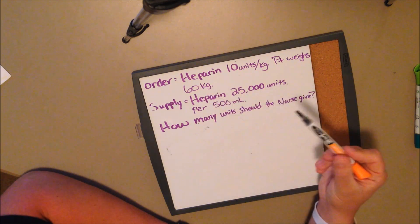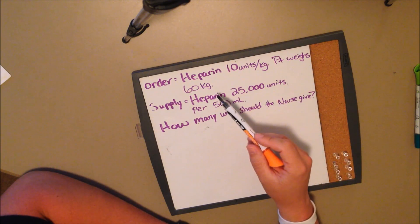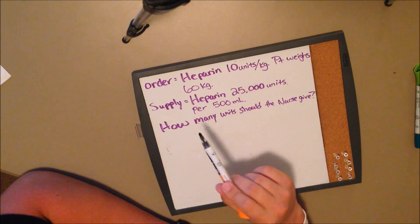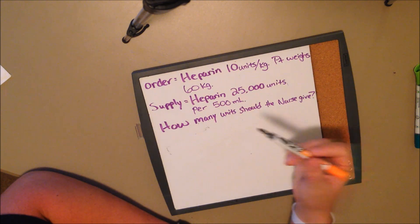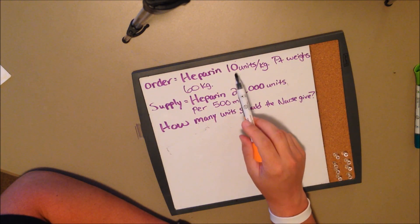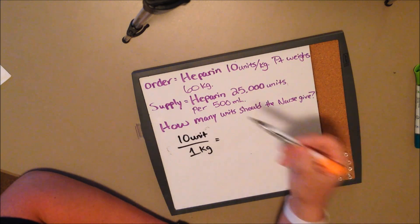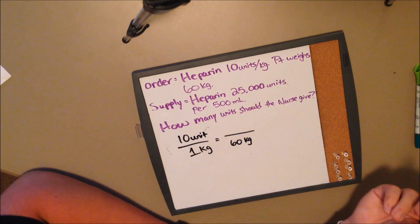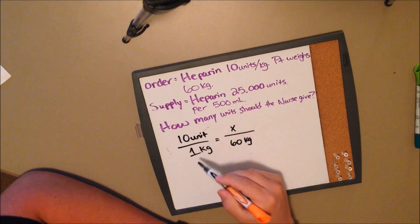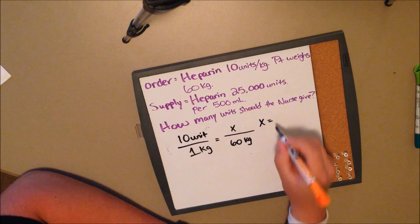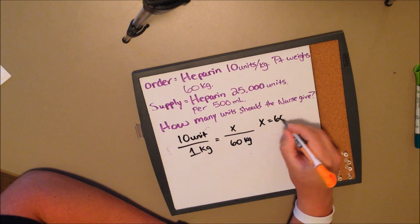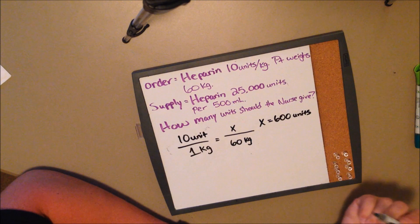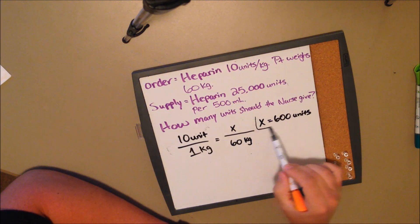They could have given you the weight in pounds and made you convert, but here it's already given. Our patient needs 10 units per kilogram of body weight and they weigh 60 kilograms. So if they need 10 units per 1 kilogram and they weigh 60 kilograms — kilograms is on the bottom, so you put it on the bottom over here. Cross multiply: 1 times X is X, and 60 times 10 is 600. So what they need is a total of 600 units. The question asked how many units, so at that point you have your answer.